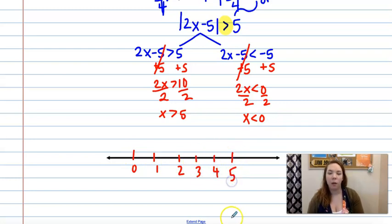So this is an or problem. We have less than 0. You want an open dot because it doesn't have the or equal to or greater than 5. So that's what it would look like on a number line.